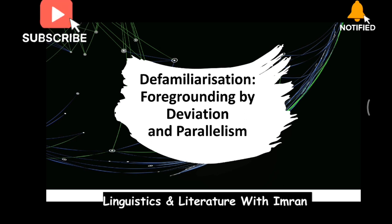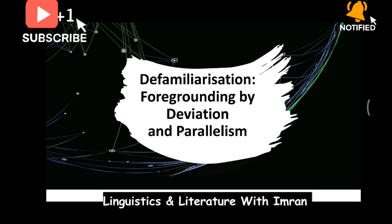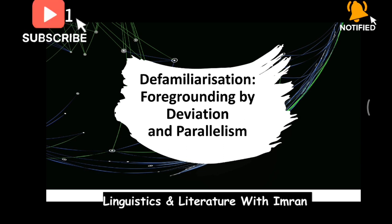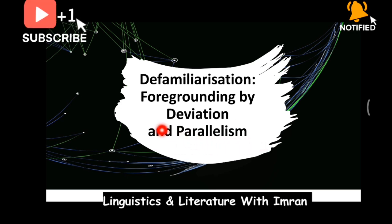When a poet does it, he brings one word forward in a line — he foregrounds it. Similarly, an artist uses a particular type of color more, so that becomes foregrounded. Or for example, they draw flowers and bring one flower forward, making it prominent. Why do they make it prominent? So that the audience's, or readers', or people's gaze first falls on that thing. So through foregrounding, they defamiliarize that object or writing. And foregrounding is achieved through deviation and through parallel structure.